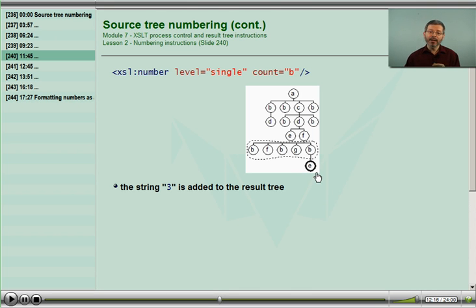Here I am at a node named E, and I'm asking the processor, count nodes named B. The processor walks up the tree, hits the B. That is what's being counted, and it does a level equals single at that B. I am only counting B's, and I see it's the third B, so 3 is added to the result tree.